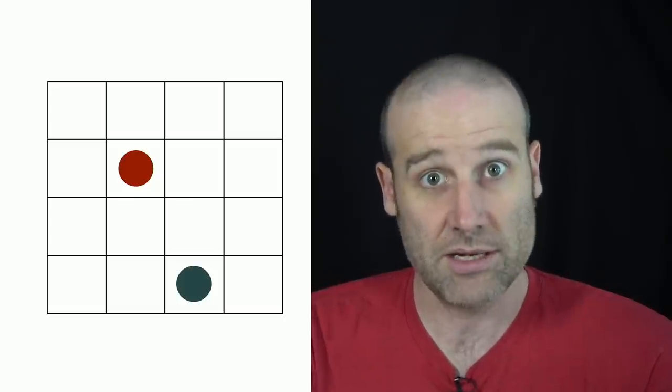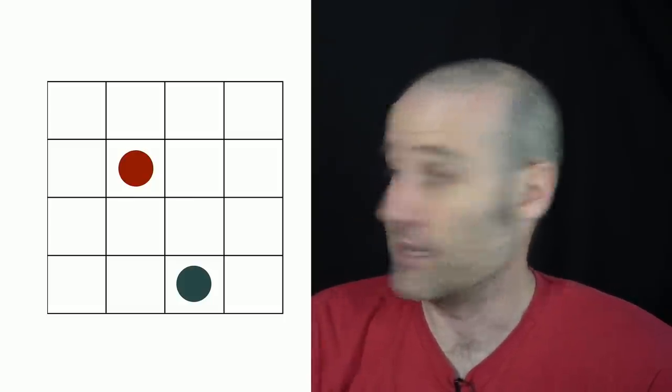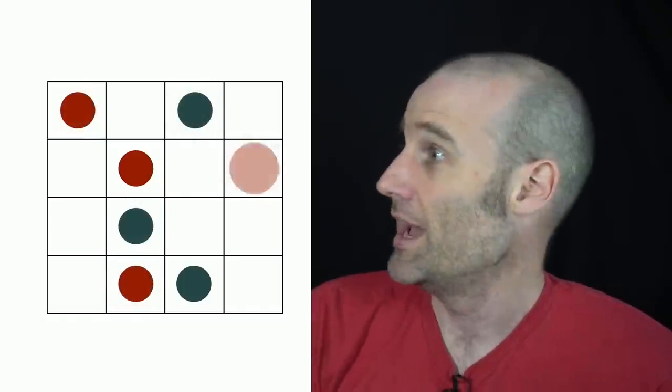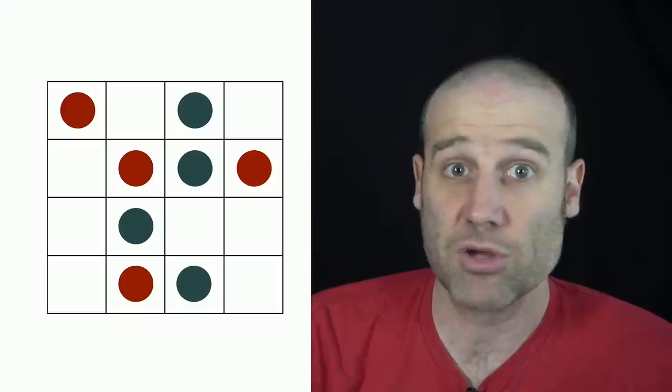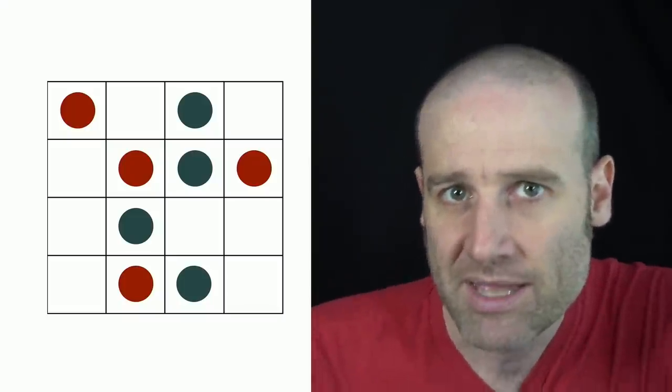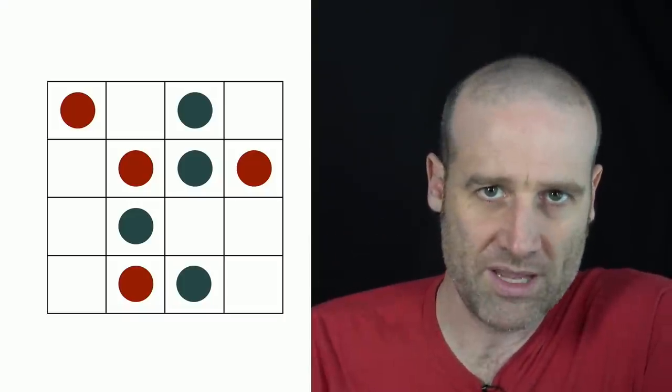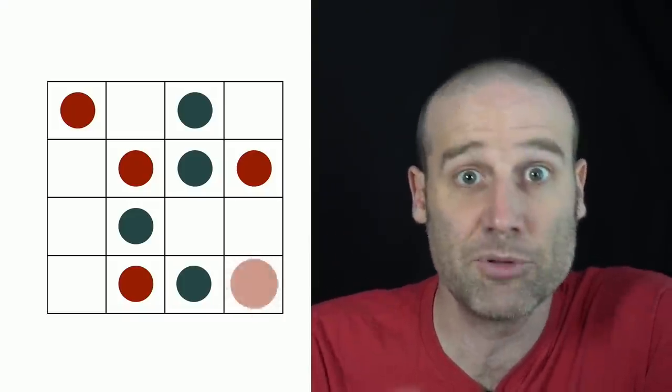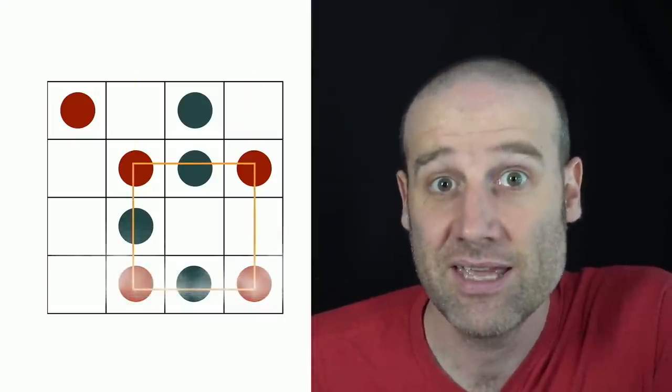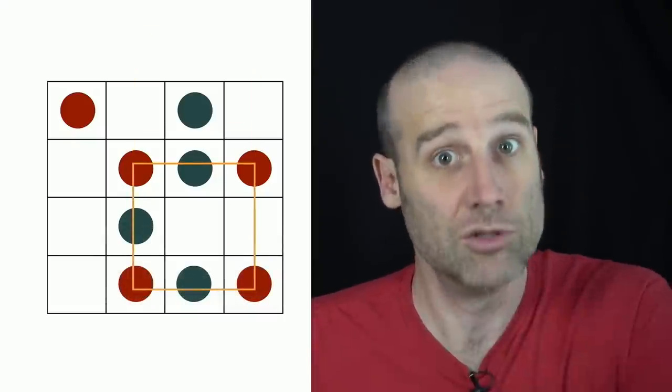The second player goes second and they put down their green token. It occurred to me while I was doing this that people might be red-green colorblind, in which case I apologize. So there are two different colored tokens appearing on the board, and the way you win this game is by avoiding forming a square. For example, if the red person went there you can see that is a square so they would then lose the game.